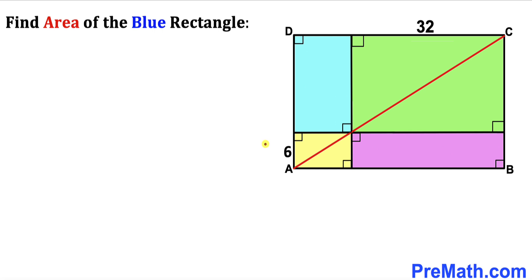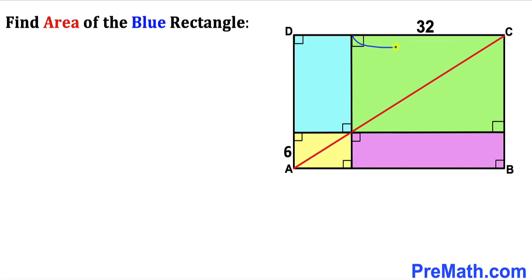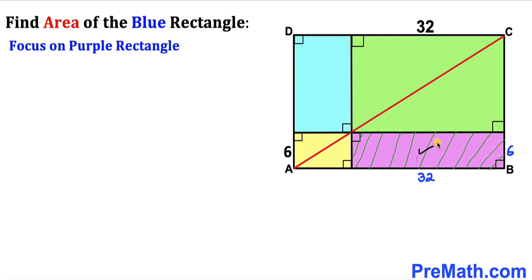Let's get started with the solution. The big rectangle ABCD has been divided into four rectangles: the green one, the blue one, the yellow one, and the purple one. The side length of the green rectangle is 32 units, so this side length is also 32 units. Likewise, the side length of the yellow rectangle is 6 units, so this side length is also 6 units.